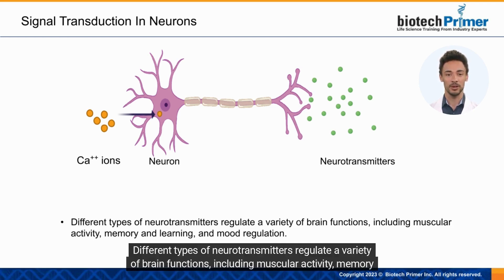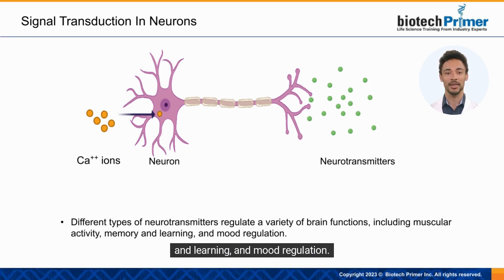Different types of neurotransmitters regulate a variety of brain functions, including muscular activity, memory and learning, and mood regulation.